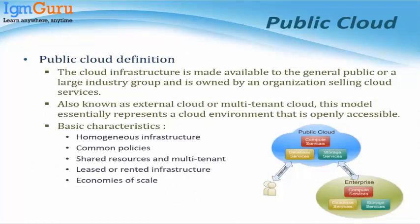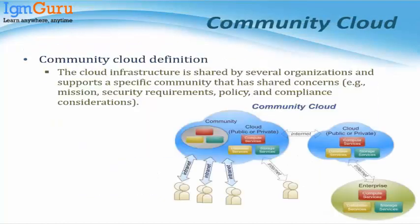Community cloud is where multiple organizations — say 10 large institutes — each want their own data center and cloud but lack the finance individually. They come together, set up a shared data center with a cloud on top, and share that infrastructure. Only those 10 institutes are part of the cloud, making it a closed community. It's a kind of semi-private cloud where you know who is there, there's a set of rules, and data is safe.